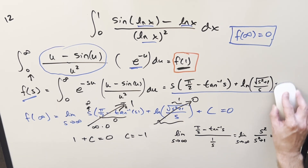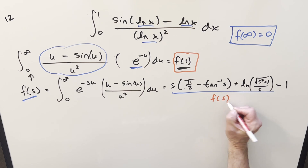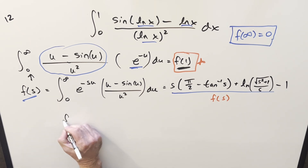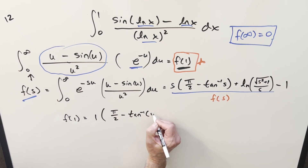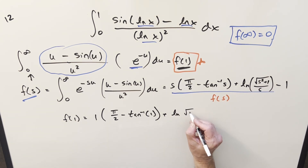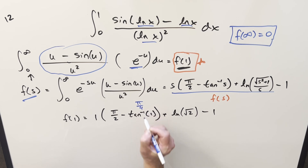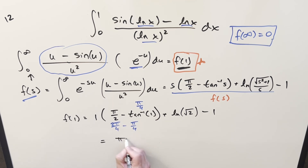With c = -1, plugging into f(s) and evaluating at s = 1: f(1) = 1·(π/2 - arctan 1) + ln(√(1 + 1)/1) - 1. Arctan(1) = π/4, so π/2 - π/4 = π/4. The log term gives ln(√2). Putting it all together: the final answer is π/4 + ln(√2) - 1.